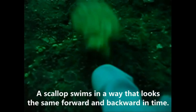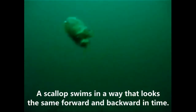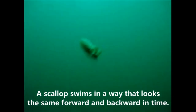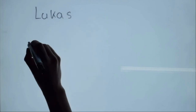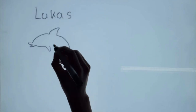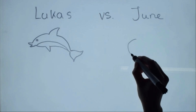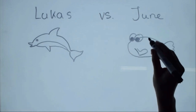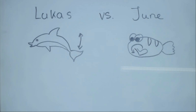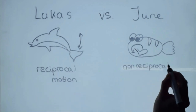Since there is time reversibility in the Stokes equation, organisms that move in a way that looks the same forward and backward in time will not be able to move at all in a viscous fluid. We propose an experiment where we let Lucas the Dolphin and June the Lobster swim in high and low viscosity fluids. Lucas swims in a way that looks the same forward and backward in time, while June's motion looks different with the direction of time. Lucas performs what is called reciprocal motion, and June performs non-reciprocal motion.